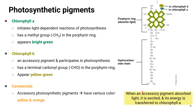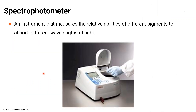When an accessory pigment absorbs light, it is excited and its energy is transferred to chlorophyll A. As you have seen, the thylakoid membrane contains more than one kind of pigment.